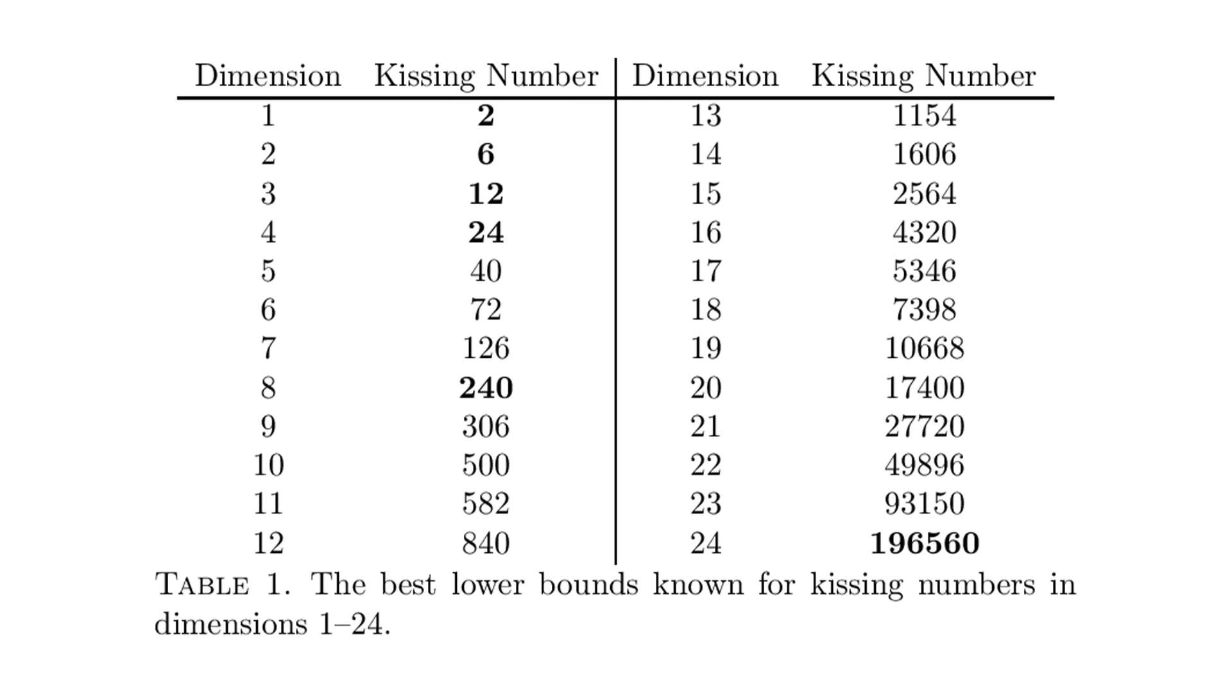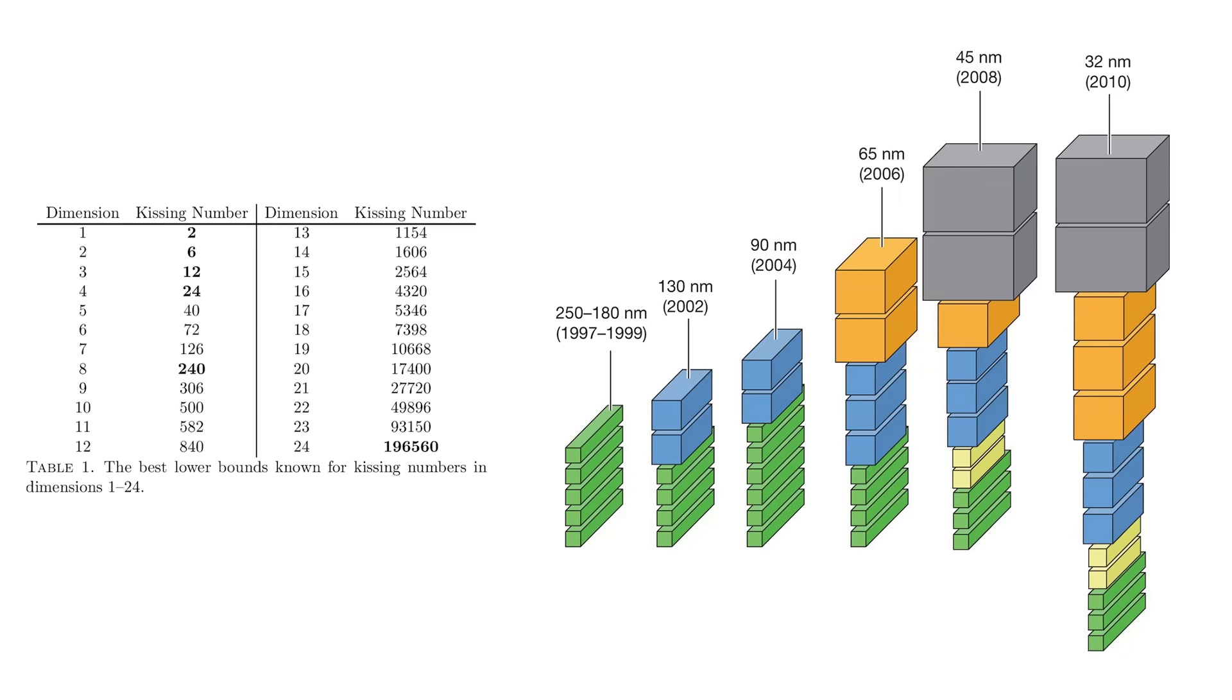Mathematicians have slowly whittled the possibilities to fairly narrow ranges for up to 24 dimensions, with a few exactly known, as you can see on this chart. For larger numbers or a general form, the problem is wide open. There are several hurdles to a full solution, including computational limitations. So expect incremental progress on this problem for years to come.